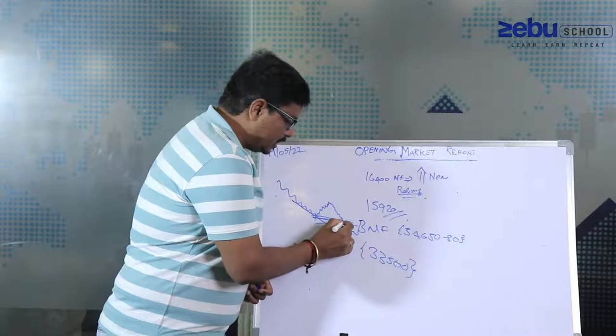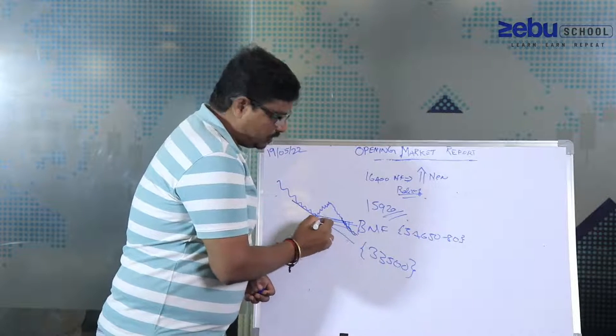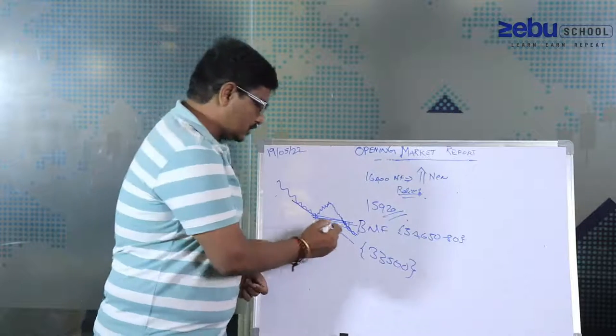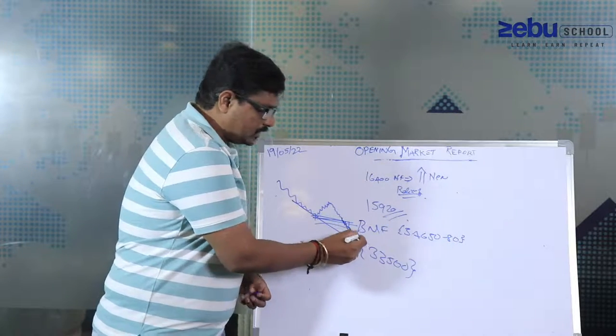When it breaks, let it make a low and then look for positive divergence in the higher time frame chart, something like this, if at all it is going to crack.